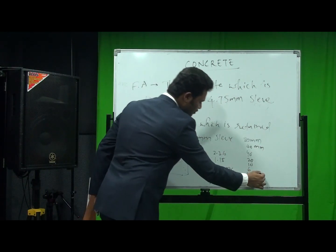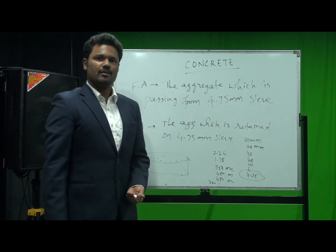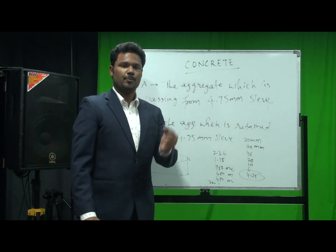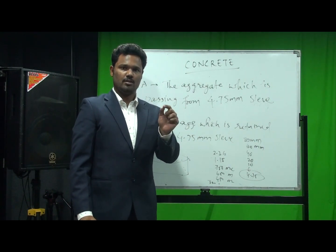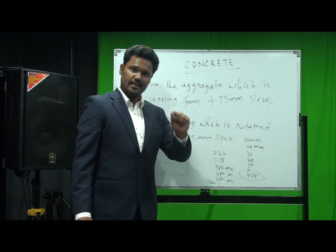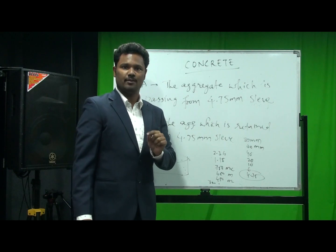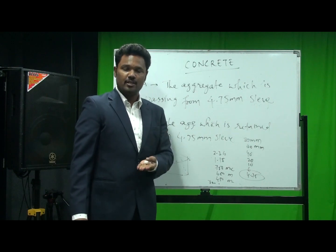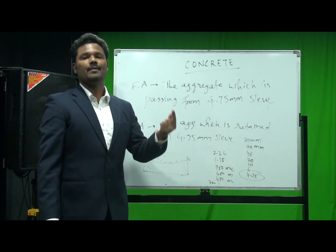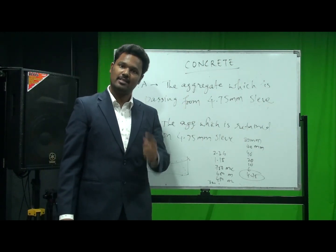We consider the 4.75 mm sieve. What do we mean by a 4.75 mm sieve? In the 4.75 mm sieve, there are small holes with a diameter of 4.75 mm. The aggregate which is retained on that sieve is called coarse aggregate, and the aggregate which passes through the 4.75 mm sieve is called fine aggregate.